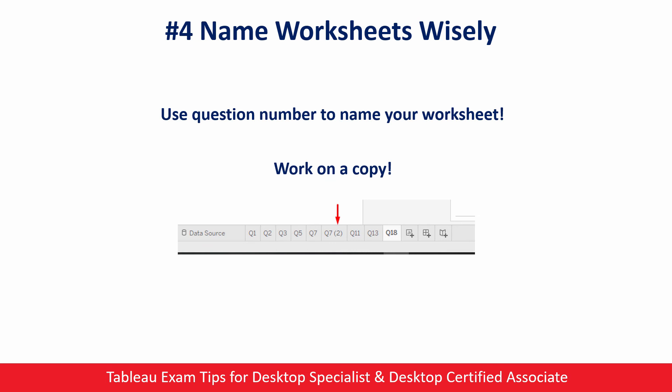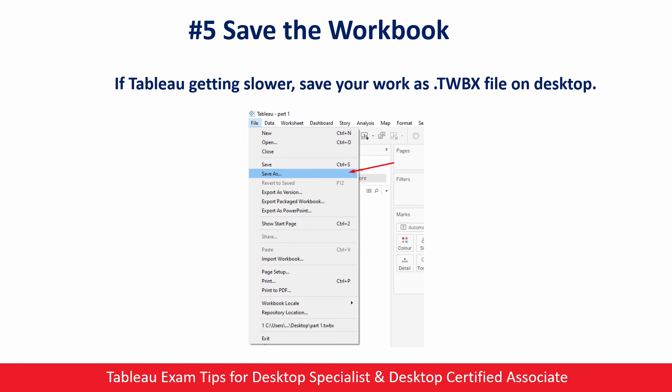Let's continue with tip number five: save your workbook and start a new one if necessary. This tip is especially useful for the certified associate exam, which has 18 hands-on questions, while the desktop specialist exam has only 8. When you add more and more worksheets, Tableau can become slower and slower. So it can be a good idea to save your workbook once you solve half of the hands-on questions. For the desktop specialist exam this is less critical, but for the certified associate exam you may want to consider it.